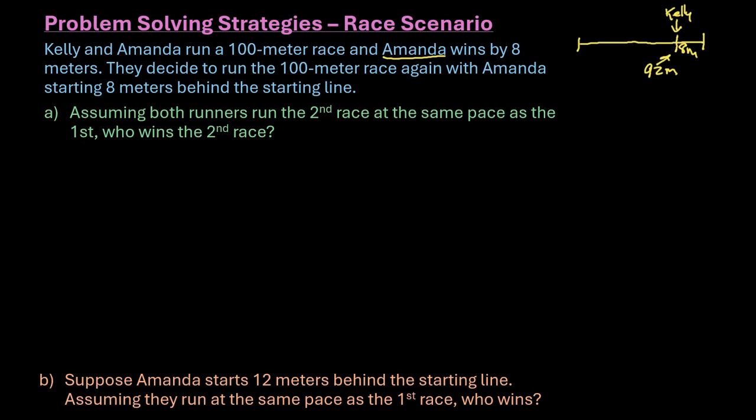I would most likely approach this with an analytical approach, where we look at the fact that we're going to look at assuming both runners run the second race at the same pace as the first. We're going to use the information that we know of distance equals rate times time.